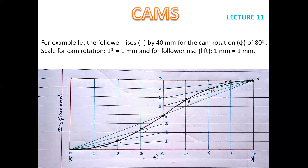Now divide the horizontal length of the rectangle into an equal even number of parts. You can divide it into 4, 6, 8, 10, 12, or 16 parts — as the number of parts increases, the accuracy of the final displacement graph increases. But taking too many is time-consuming, so optimally take 8 equal divisions. Since the length is 80 mm, each marking is at every 10 mm: 0, 1, 2, 3, 4 up to 8. From all these points, draw vertical lines so the rectangle is divided into 8 equal vertical parts.